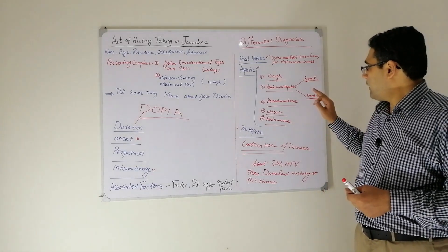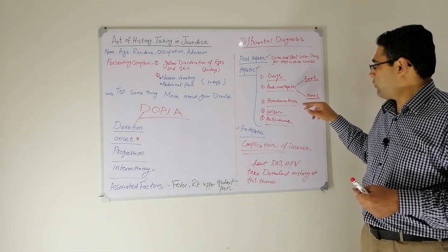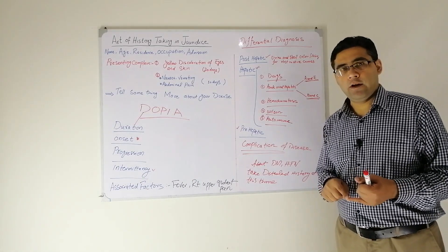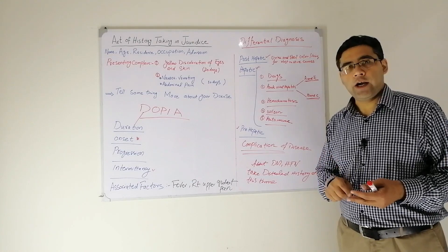While asking the question regarding hemochromatosis, ask about any change of color of his skin, joint pains, polyuria, and polydipsia.